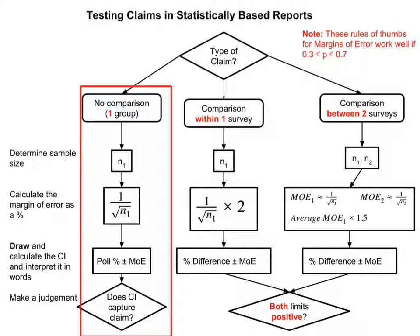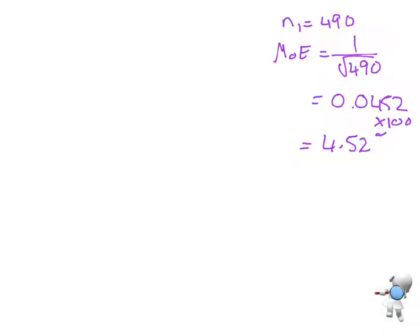So my margin of error, that's my first step, is this formula, 1 over the square root of N1. So that's the first thing that I am going to do. So I know that N1 is 490, and my margin of error is 1 over the square root of 490. I'm going to type that into the calculator, and that will give me an answer of 0.0452, which I then multiply by 100 to get a value of 4.52%. So that's my margin of error.